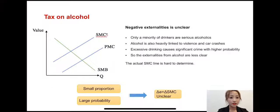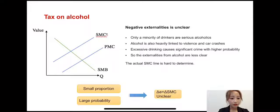Third is about the tax on alcohol. The external costs from alcohol are less clear, because only a minority of drinkers are serious alcoholics, which limits the direct health care cost from drinking. Alcohol is also heavily linked to violence and car crashes. Excessive drinking does cause significant crime with higher probability. The graph shows the actual social marginal cost line is hard to determine because of the smaller proportion and larger probabilities.